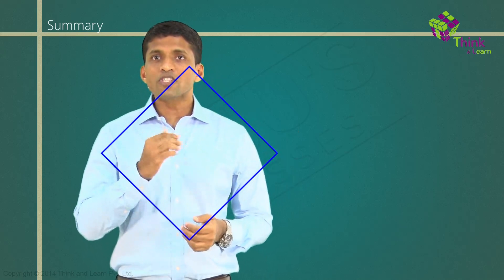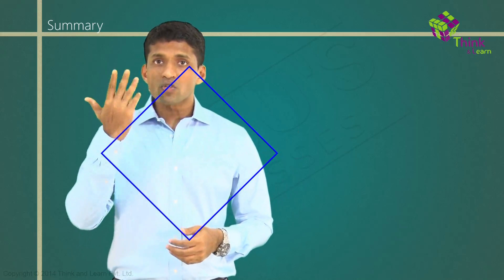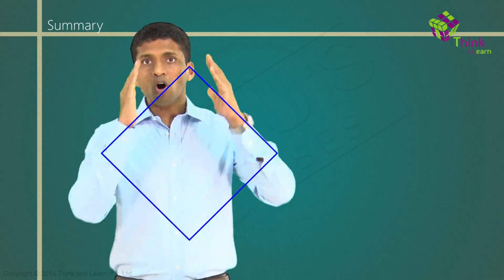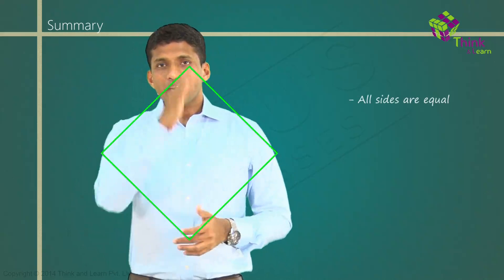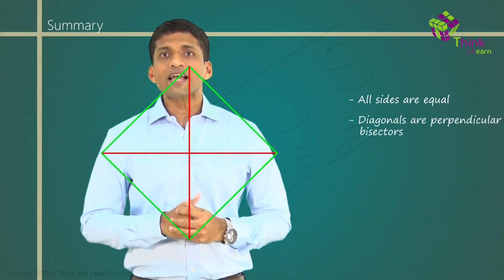Next, we look at special parallelograms, starting with a rhombus like this, which will have the properties of a parallelogram as well as that of a kite. So all sides are equal, diagonals will be perpendicular bisectors,